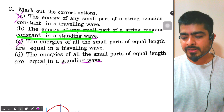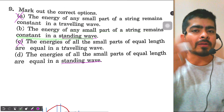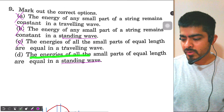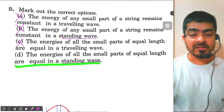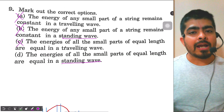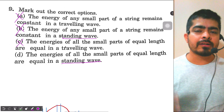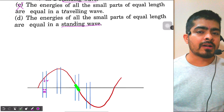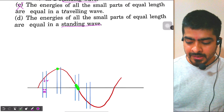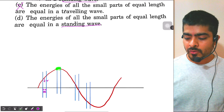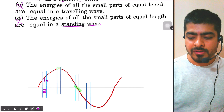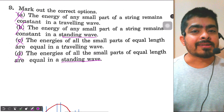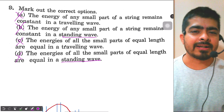Coming to the options for a standing wave: Option A — energy of any small part remains constant in a standing wave — is wrong, because at the anti-node the energy is zero at amplitudes but maximum at mean position. Option D — energies of all small parts of equal length are equal in a standing wave — is also wrong, because a particle near the node has only potential energy while one at the amplitude has zero of both. So all four options are wrong! Kindly share your thoughts in the comments and subscribe for more such interesting questions.